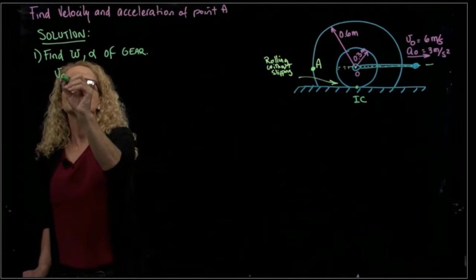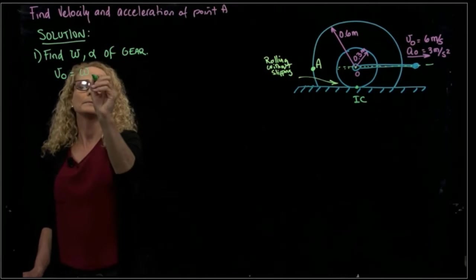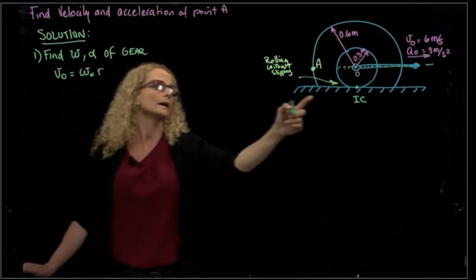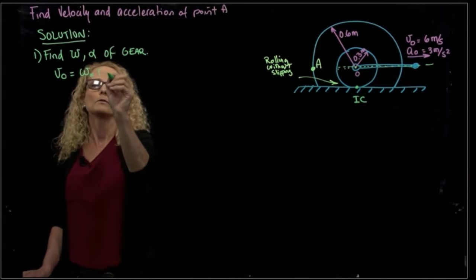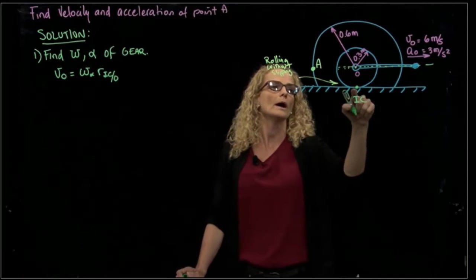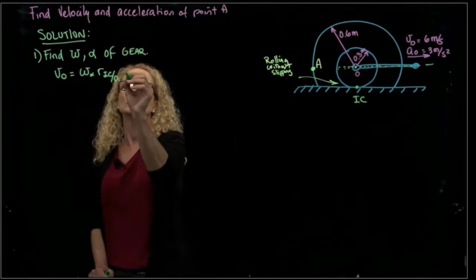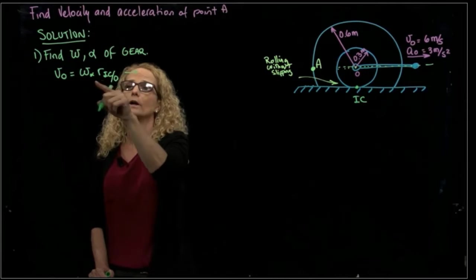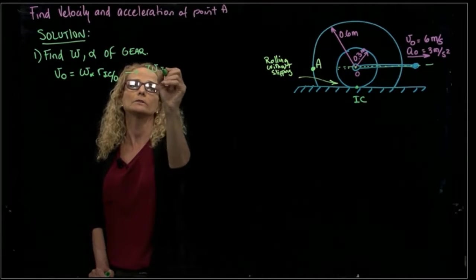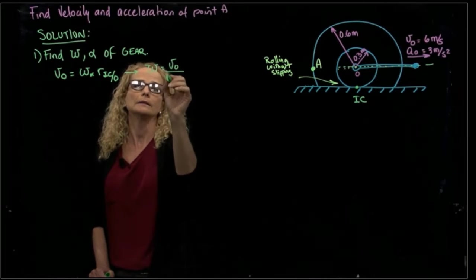the velocity of O will be the angular velocity of my gear, times the vector position between that point O and the instant rotation. Since I know the velocity and I know the vector, I can say that the angular velocity of the gear will be the velocity O over that distance.